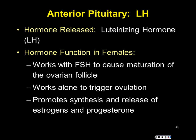The LH surge ruptures the follicle — like popping a blister — releasing the egg, or oocyte. LH also promotes production of estrogen and progesterone to help maintain a potential pregnancy. If a woman has high FSH but no LH, the follicles grow but don't rupture — she doesn't ovulate and can't get pregnant. This can result in cystic ovaries. Treatment options include physically rupturing the cyst or administering LH.